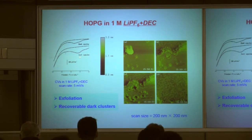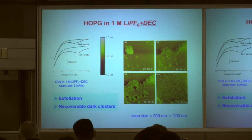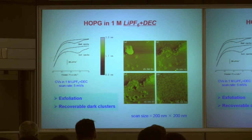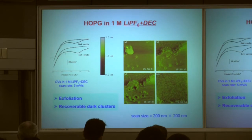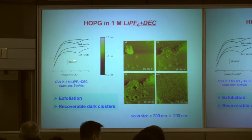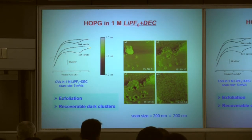With DEC as the electrolyte, the cyclic voltammogram shows big peaks, including a peak corresponding to oxygen reduction. You can see the surface change at different potential regions. At first, the surface is flat. If you go to the negative potential region, the surface becomes rough. However, if you go back to the original potential region, the surface is partially recovered.